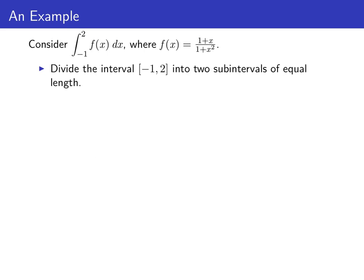So let's look at Simpson's rule through an example. Consider the integral from -1 to 2 of f(x) dx where we'll use f(x) = (1 + x)/(1 + x²). To use Simpson's rule, like every other integral approximation technique, we start by partitioning the interval [-1, 2]. In this case, let's do it into two subintervals of equal length.